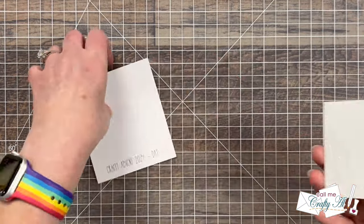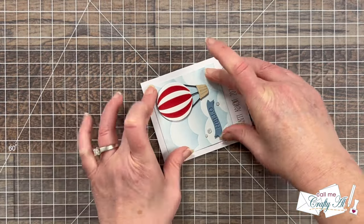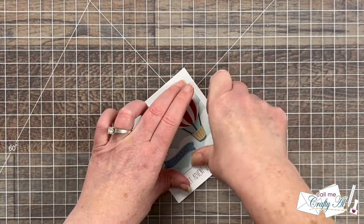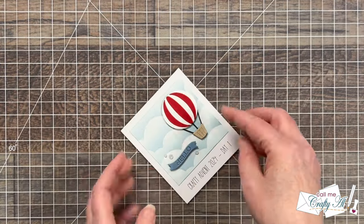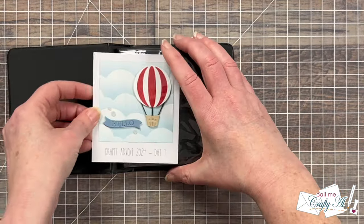So once I had my square done I got it added to the top center of my background piece and then it's just going to get put back in the album. So at the end of the month I will be able to go back and just see what each day's little gift was. It's such a fun and cute way to remember this series.